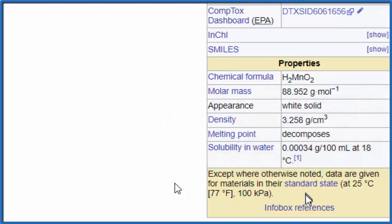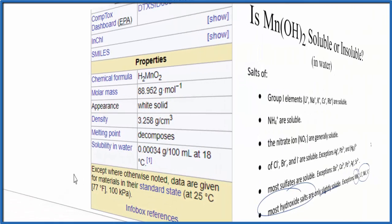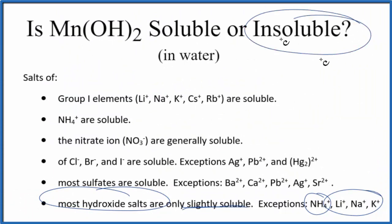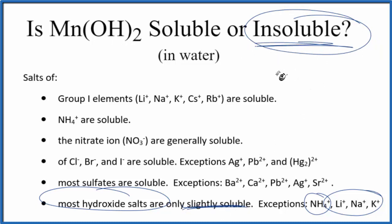For the purpose of net ionic equations, we would consider this insoluble. So in answer to our question, Mn(OH)₂ is insoluble in water or only slightly soluble — maybe a little bit dissolved, but virtually insoluble.